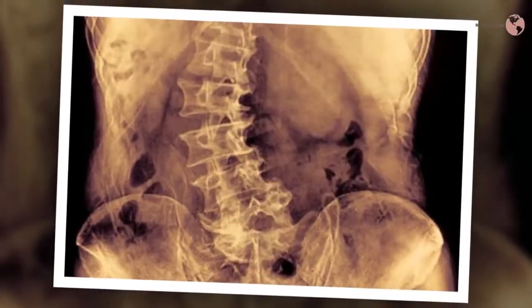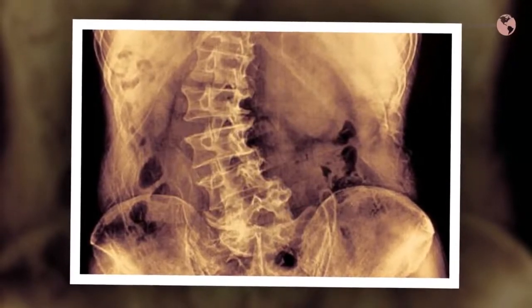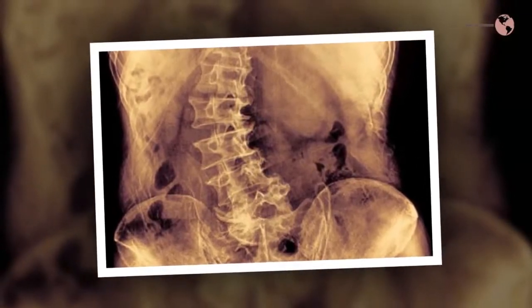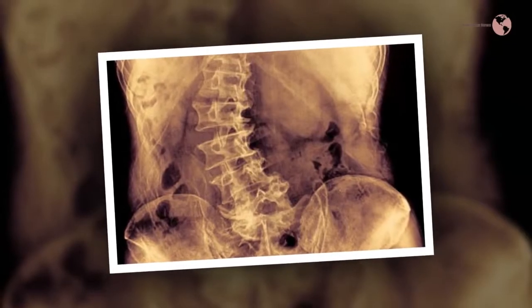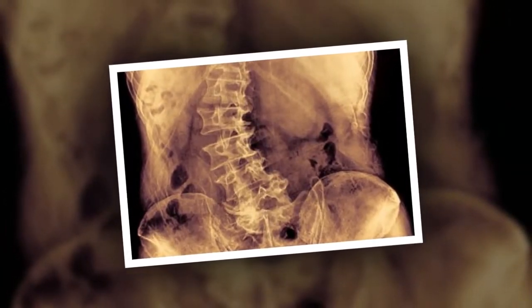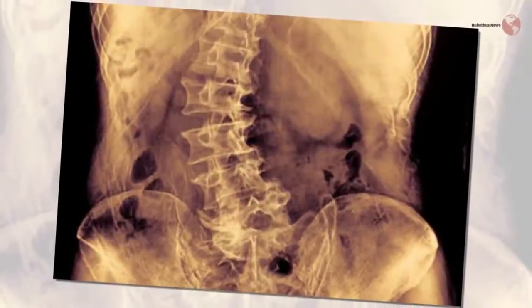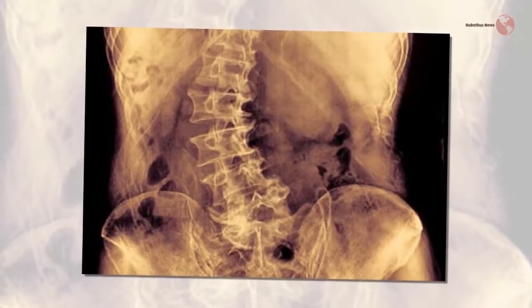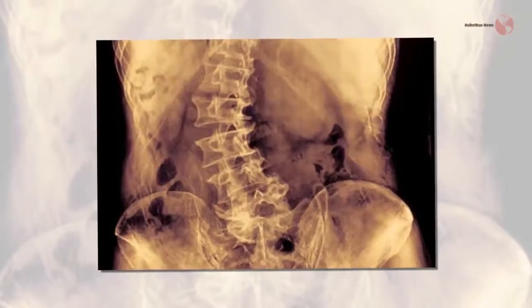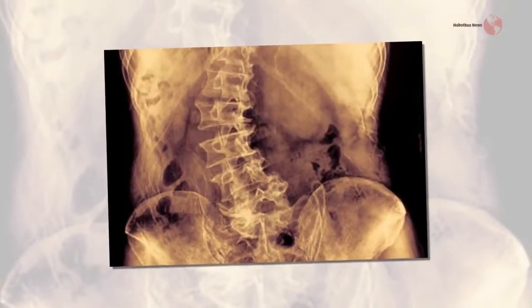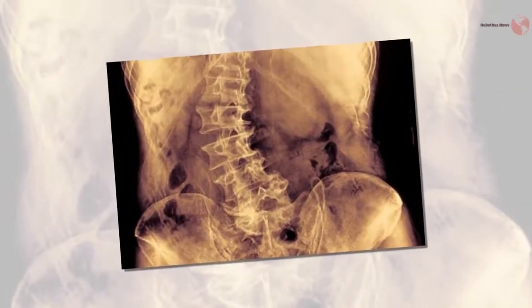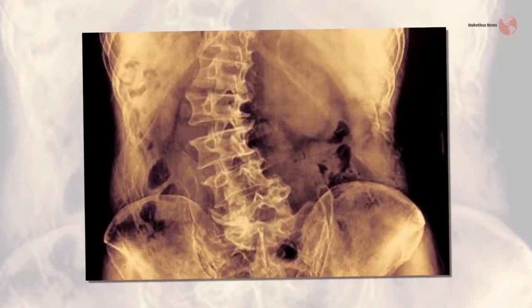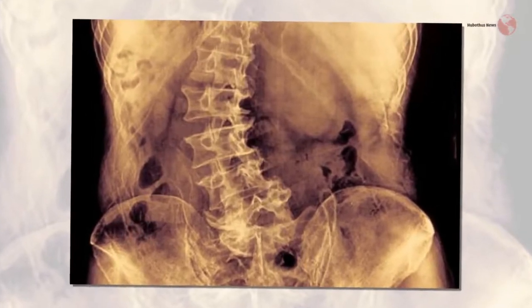Types of scoliosis and levoscoliosis with known causes — non-idiopathic — include: congenital scoliosis, caused by conditions present at birth that interfere with the development of the spinal bones and configuration; neuromuscular scoliosis, caused by conditions that cause a loss of muscle control and sensation; degenerative scoliosis, caused by wear and tear on the bones and joints of the spine that naturally occurs with age; and mesenchymal or syndromic scoliosis, caused by a more significant syndrome or condition that interferes with or limits the connective tissues and joints that stabilize the spine.